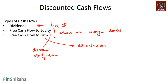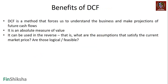In the case of free cash flow to firm, we use a variant of EBIT — a cash flow to both equity and debt holders. Those are the discounted cash flows we'll use, and we'll look at examples of a variety of companies.